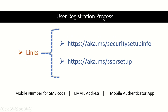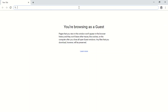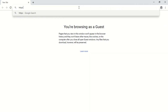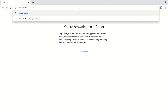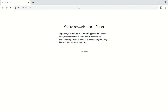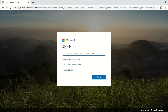Now let's look at the user registration process. The user can sign in at aka.ms/mysecurityinfo or aka.ms/SSPRsetup to self-register for this feature. I'll switch to my browser, sign in with a licensed user, and use aka.ms/SSPRsetup to register so I can use this feature.